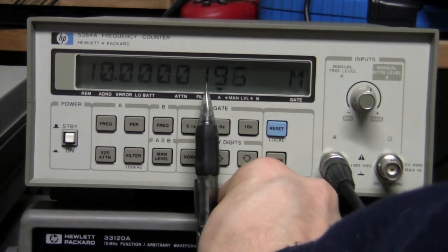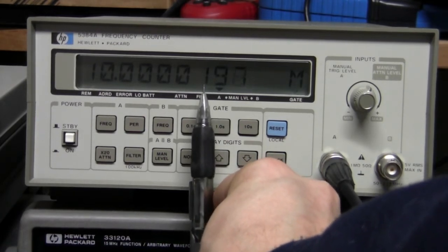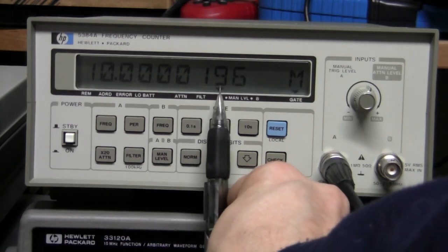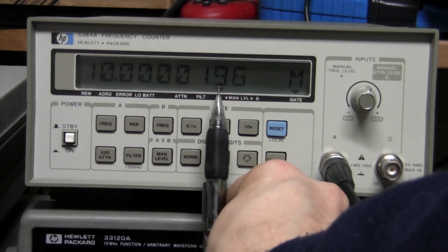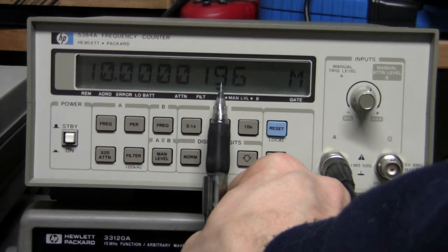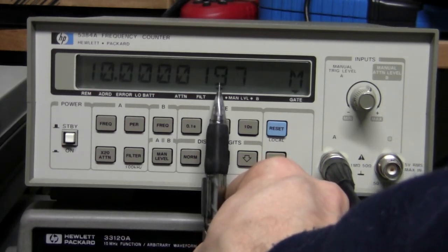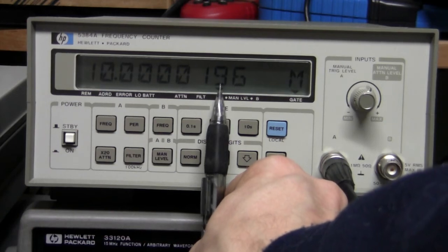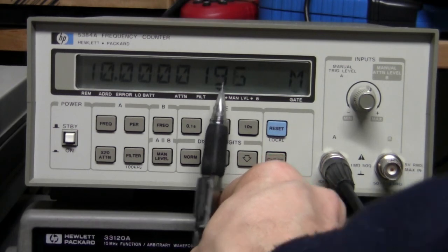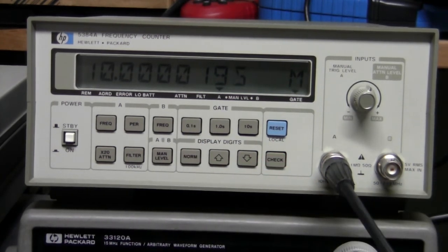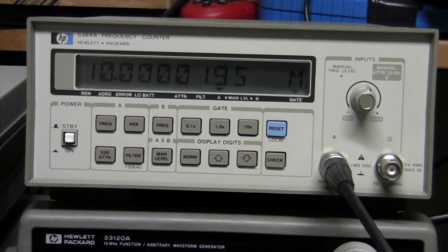So here we are, 10 megahertz, and again almost 2 ppm higher according to my counter, but compared to the previous one. And then just a few counts lower in this decimal place, which is 10th of ppm. So it's just a few 10th of ppm lower than the previous one, which is very good. I am happy with this.